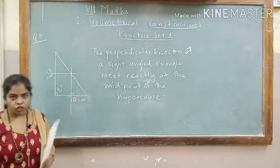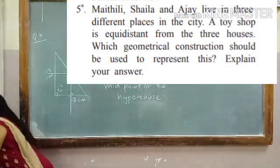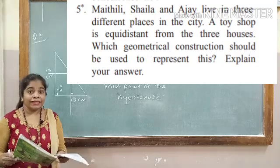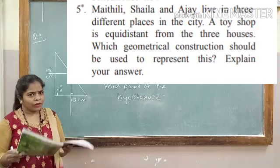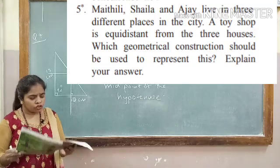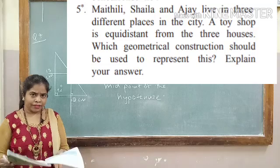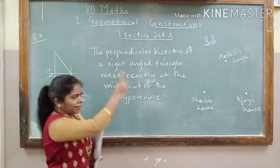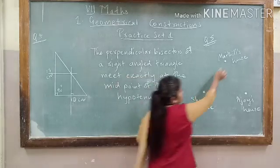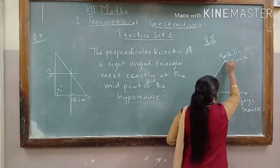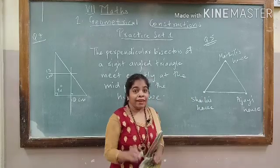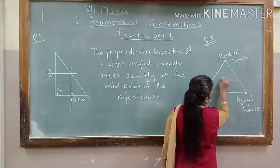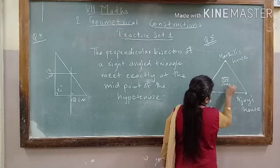Now we will move to question number 5. You will see question number 5 flashing on your screen. Maithili, Shaila, and Ajay live in three different places in the city. A toy shop is equidistant from the three houses. Which geometrical construction should be used to explain this? So we can imagine the three houses in the form of a triangle — Maithili's house, Shaila's house, and Ajay's house. There is a toy shop which is exactly equidistant from all of their houses.